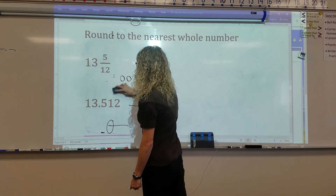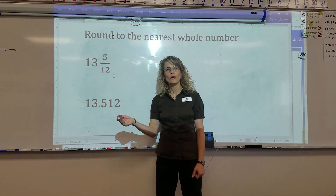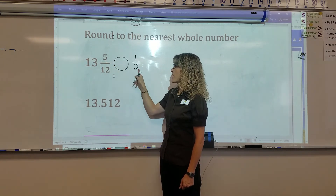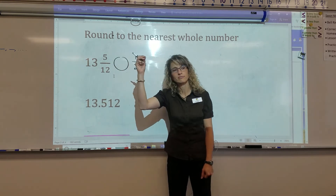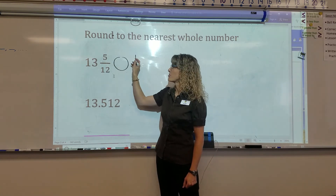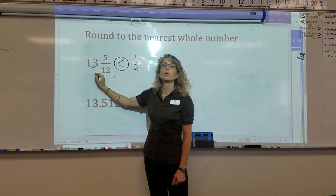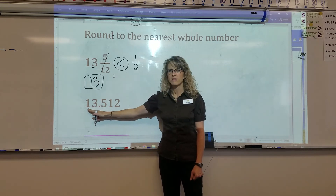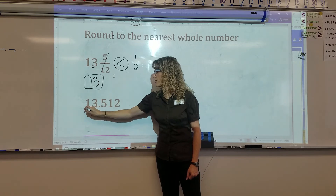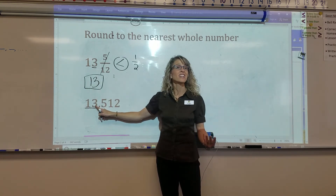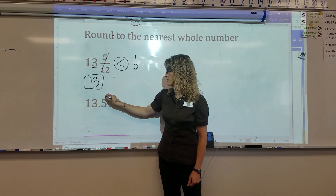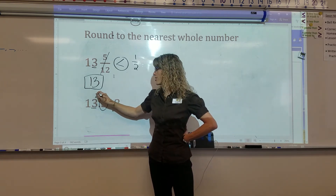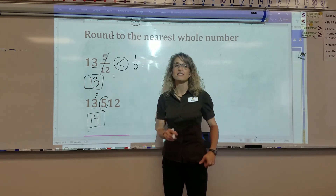Let's do a mixed number: 13 and 5 twelfths. The rule on fractions is: half or more, make it soar; less than half, let it rest. So we're going to do a comparison and compare 5 twelfths to one half. Is 5 twelfths more than a half or less? Less — because it would have to be 6 twelfths to be half. Because it's less than half, my 13 will rest. That goes away, and 13 is my nearest whole number. What about a decimal number where I'm rounding to the nearest whole number? I have to decide: is it going to stay 13, or will it go to 14? We examine just the digit after the decimal, circle the 5 — five or more, make it soar. Soar! So the 3 becomes a 4, and 14 is my nearest whole number.